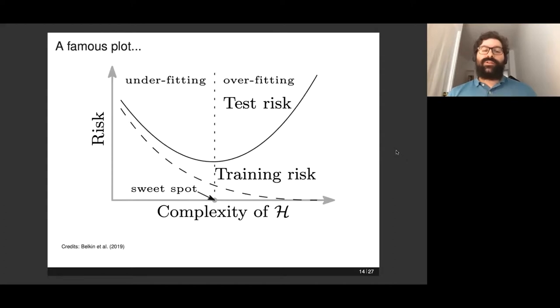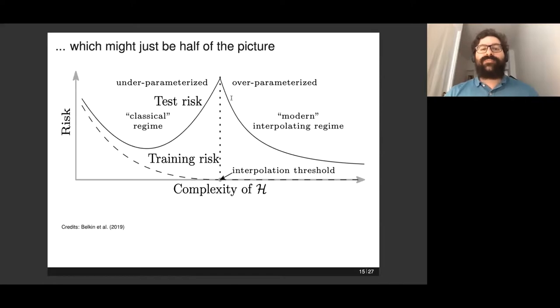The quest in statistics and machine learning has always been for that sweet spot, the optimal trade-off between complexity and optimizing training and test risk. It's kind of a bias and variance trade-off. This plot, which is extremely famous, might just be half of the picture. That's the conjecture of Belkin and co-authors in their paper last year. They proposed this new interpretation. Rather than underfitting and overfitting, they call those two regimes underparameterized and overparameterized. You have that classical sweet spot, and then as you keep increasing the complexity of H, the training risk still is zero, but the test risk goes up until a certain point—you reach a plateau. Then surprisingly, the test risk starts decreasing again. This is what they call the interpolating regime. This interpolation threshold might very well explain why deep neural networks are actually able to have good generalization abilities.